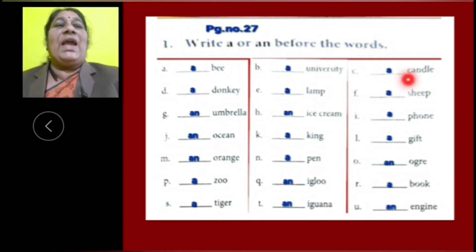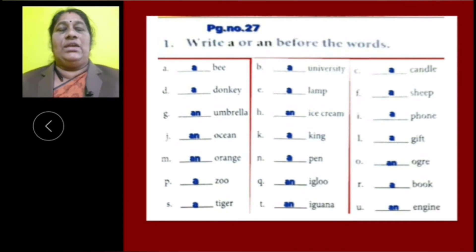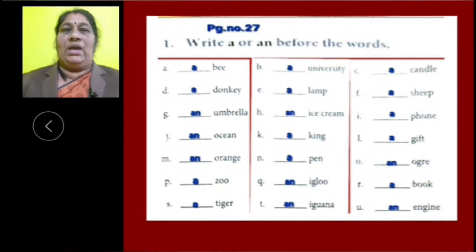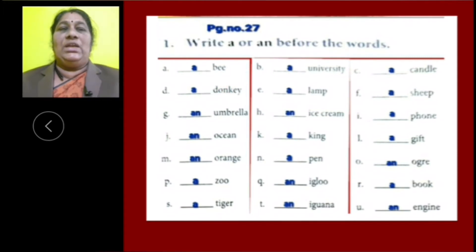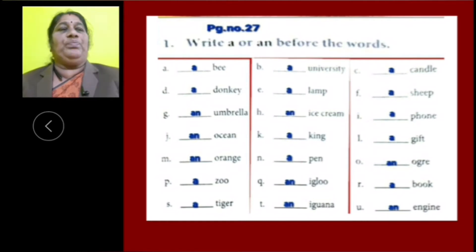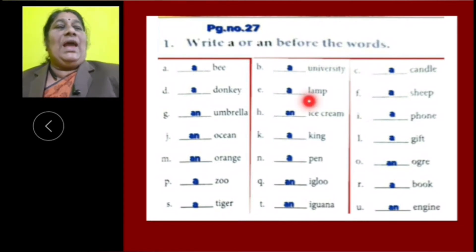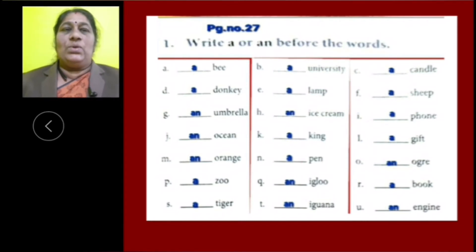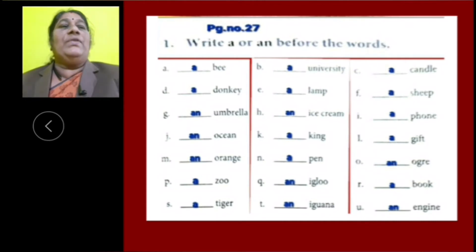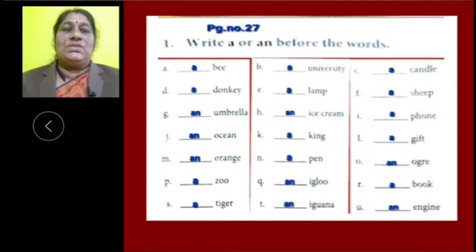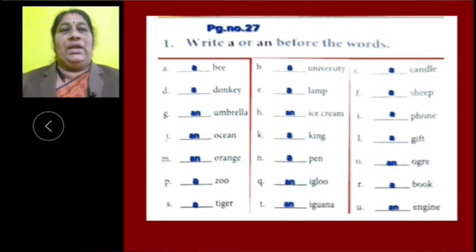C: Cantel started with consonant letters, so we have to use A. D: Donkey is started with consonant letters, so we have to use article A. E: Lamp is also a consonant letter word, so we have to use article A. F: Sheep is also a consonant letter word, so we have to use article A.